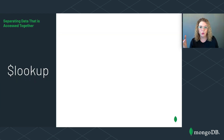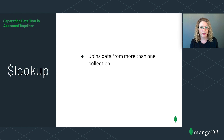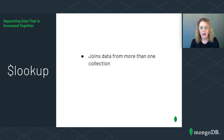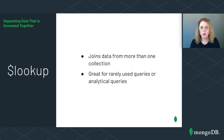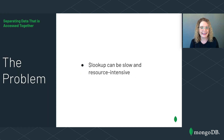Much like you would use a join to combine information from different tables in a relational database, MongoDB has a $lookup operation that allows you to join information from more than one collection. Back in the very first anti-pattern on massive arrays, you saw me use $lookup to join information from two different collections. $lookup is great for infrequent or rarely used queries, or perhaps analytical queries that can run overnight without a time limit.